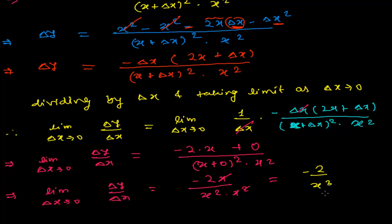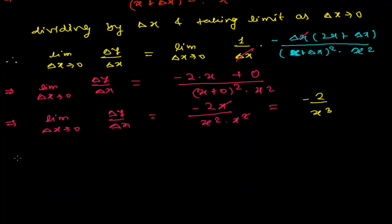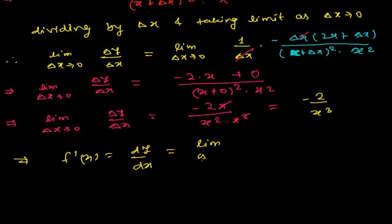So this is my answer. My derivative — written as f prime of x, or dy/dx, or limit as delta x tends to 0 of delta y over delta x — is equal to minus 2 over x cubed. So, this is how you solve this kind of problem.